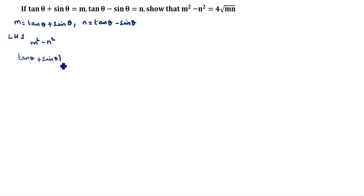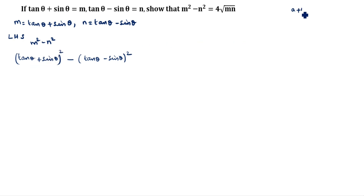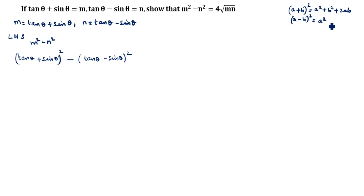So m² - n² becomes (tan θ + sin θ)² - (tan θ - sin θ)². The first is (a + b)² format and the second is (a - b)² format. Recall: (a + b)² = a² + b² + 2ab, and (a - b)² = a² + b² - 2ab. We will expand using these formulas.